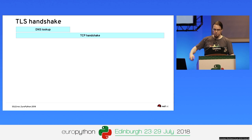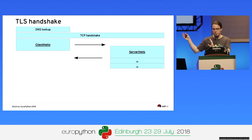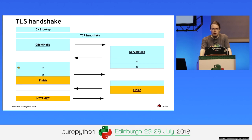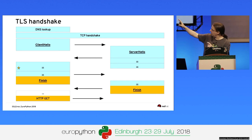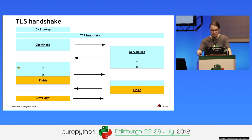First, we look up the name, do a TCP handshake to establish a connection. Then the client sends a hello; the server answers with another hello. They do a bit of handshake — it's like ping-pong — and only at the very end do we start the actual encrypted communication. That makes TLS a bit slow, though it's optimized in TLS 1.3 and with session resumption.